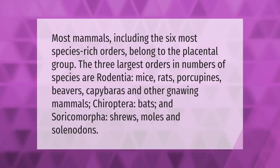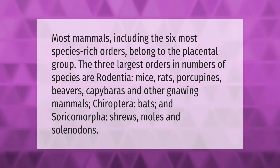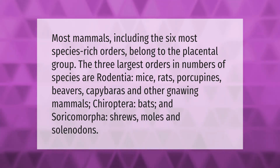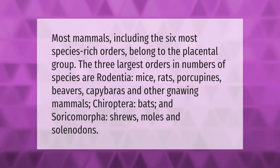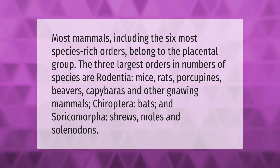Most mammals, including the six most species-rich orders, belong to the placental group. The three largest orders in number of species are Rodentia — mice, rats, porcupines, beavers, capybaras and other gnawing mammals — Chiroptera (bats), and Soricomorpha — shrews, moles, and solenodons.